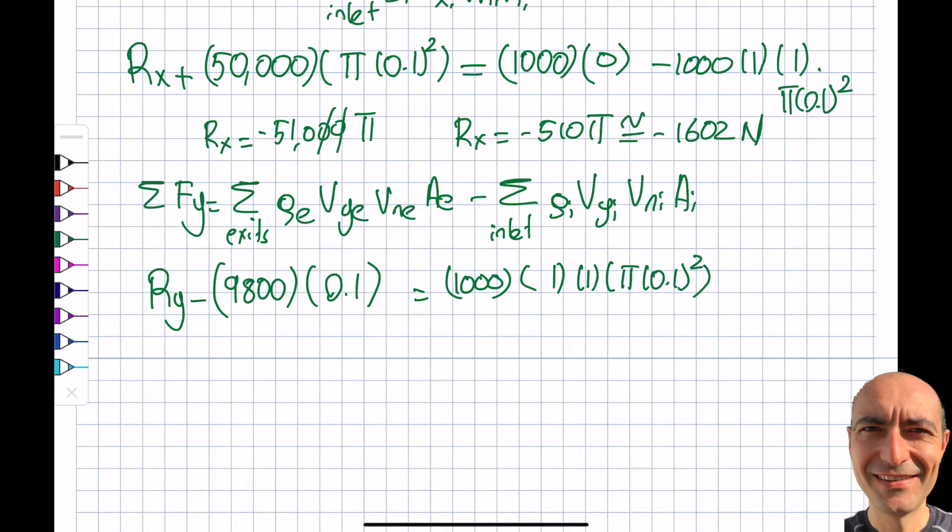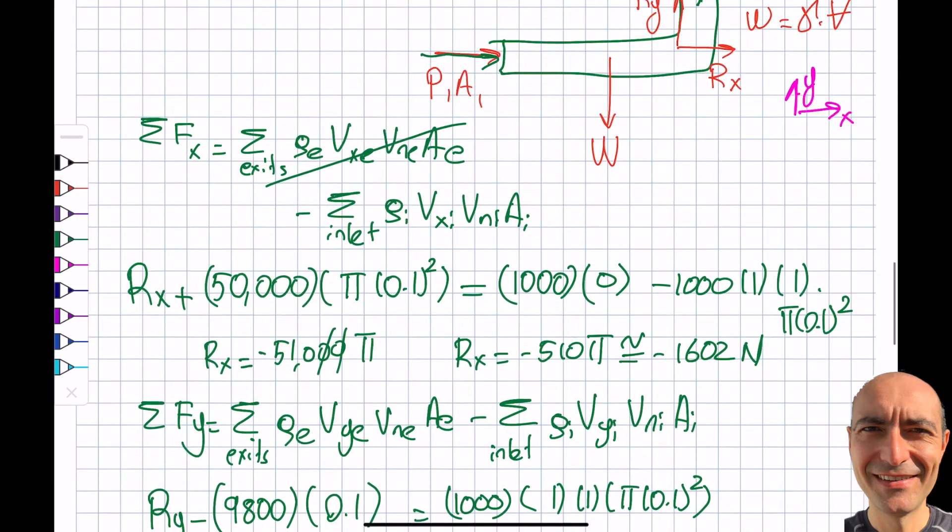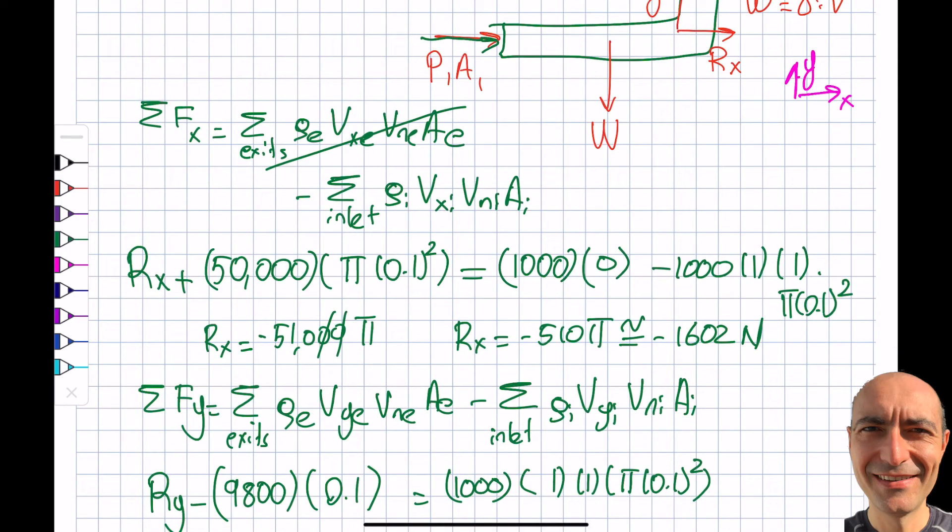I'm not sure I misspoke, but I meant to say Vne over here. So V2 basically. And looking over here, I'm going to take a shortcut, but I expect you to know this. What will be Vy1? So it's in this direction, the component in the y direction will be 0. So that's gone.